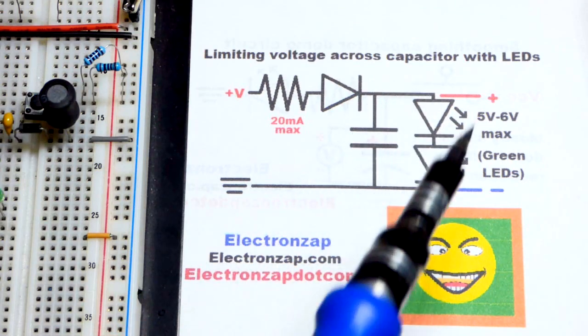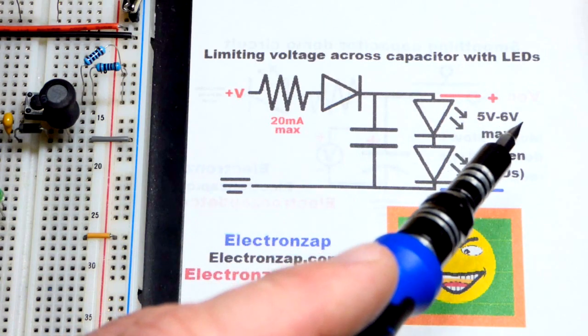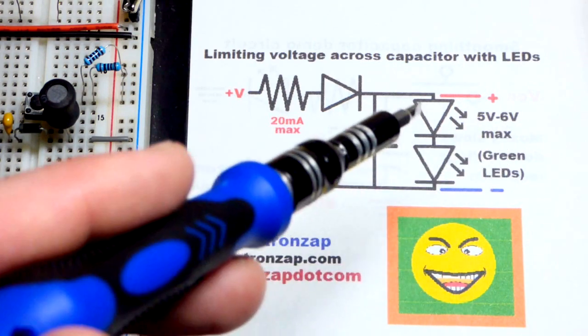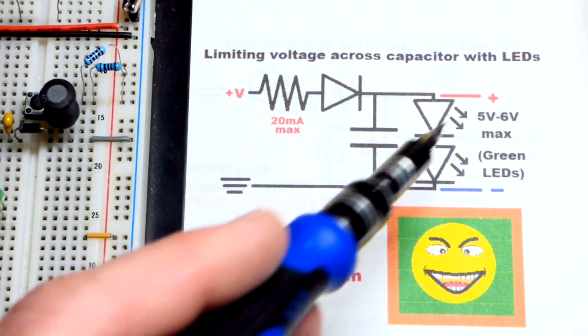If enough current's going through it will build up to about 6 volts across two of them, and it could go even higher but we're not going to deal with currents that high so we'll probably be stuck in the 5 volt range.